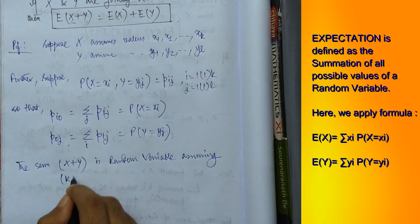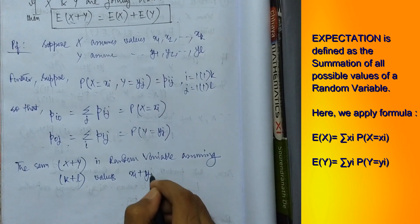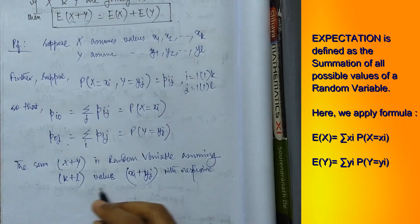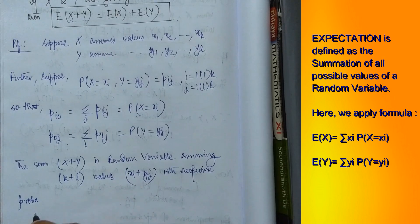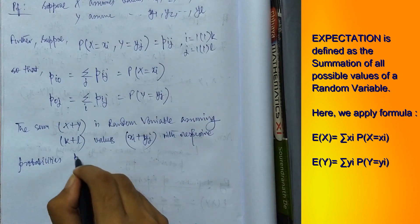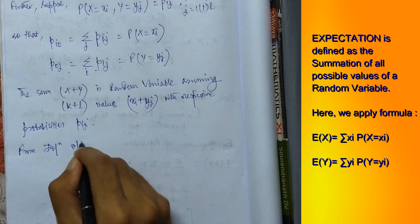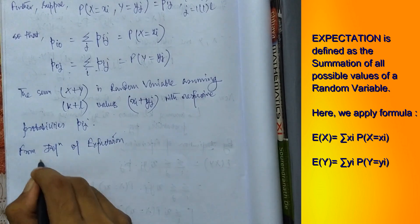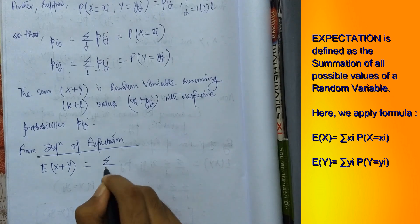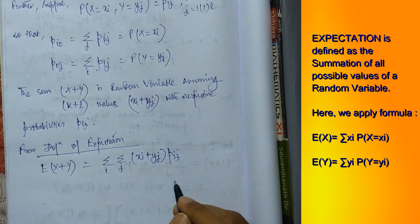The sum X + Y assumes k·l values, which are xi + yj, with respective probabilities p_ij. Hence, by the definition of expectation, E[X + Y] equals Σi Σj (xi + yj)·p_ij.